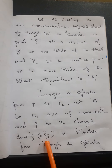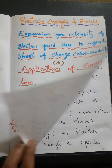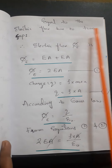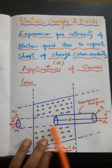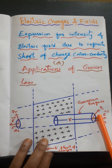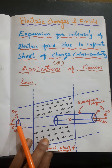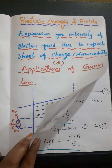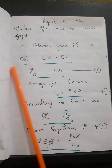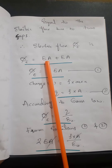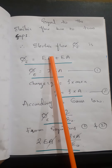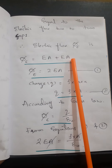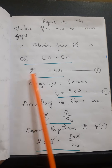The electric flux through the cylinder equals the electric flux due to the two caps, since the flux at the curved surface is zero. So we calculate the electric flux through these two caps. The definition of electric flux is the product of the intensity of the electric field and area. The electric flux through the first cap is EA, and through the second cap is also EA.